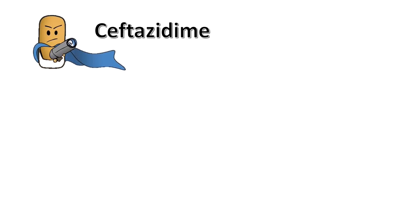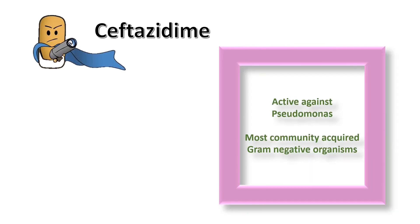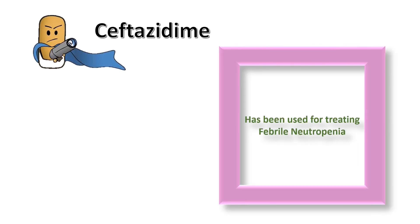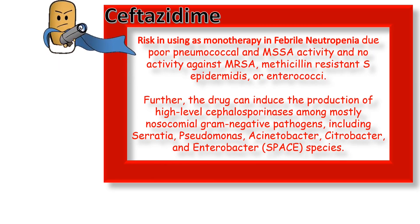Now let's talk about the third generation cephalosporin that is active against Pseudomonas. Ceftazidime is the third generation cephalosporin which has activity against Pseudomonas. It has activity against most community-acquired gram-negative pathogens in addition to Pseudomonas aeruginosa, and has been effective in treating Pseudomonas aeruginosa meningitis. Ceftazidime is an FDA-approved drug for inpatient treatment of febrile neutropenia. However, its use is not recommended as monotherapy because of poor activity against pneumococcal infections, MSSA, no activity against MRSA, Staphylococcus epidermidis, and enterococcus.